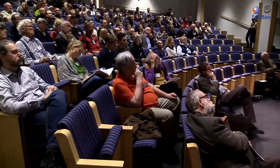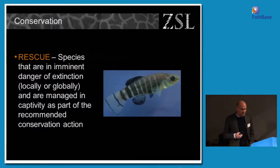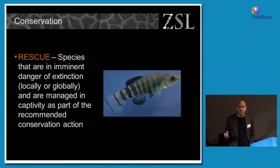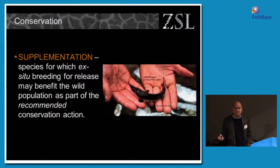The second group is the Rescue group, also under conservation. These are species that are in imminent danger of extinction, either locally or globally, and are managed in captivity as part of their recommended conservation action. Here's a Aphanius transgrediens from Turkey — a critically endangered species on the verge of extinction in the wild, with a few populations in captivity. Without those backup populations, if we lose the species completely in the wild, there will never be hope for returning it to the wild in future. The third category under conservation is Supplementation — species for which ex situ breeding and release back into the wild may immediately benefit the population. Lake sturgeon is an example, with North American aquariums involved in head-start projects breeding and releasing animals back into the wild.